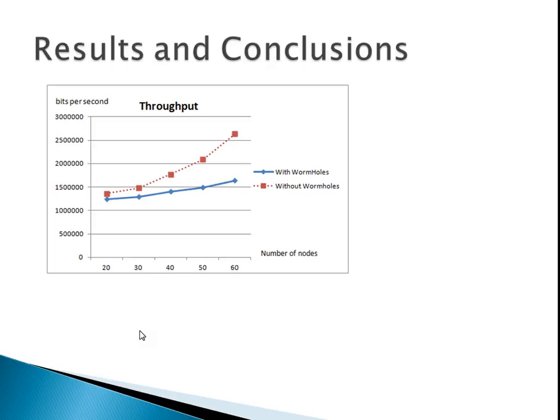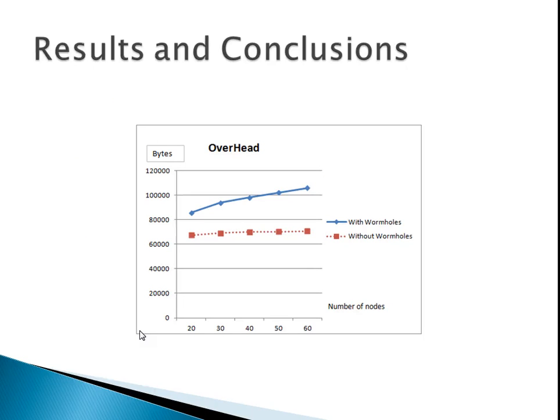Here is a snapshot of our results and conclusions. When we ran our simulation without wormhole nodes — represented by the red line — we saw that throughput was increasing as we added more nodes to the network. When we introduced the four wormhole nodes, we saw that throughput was not as high as without wormhole nodes. This result leads us to conclude that wormhole nodes affect MANETs by decreasing throughput. Secondly, when we ran our simulation to calculate overhead, the time it took to transfer packets was relatively shorter without wormhole nodes than when we introduced them.